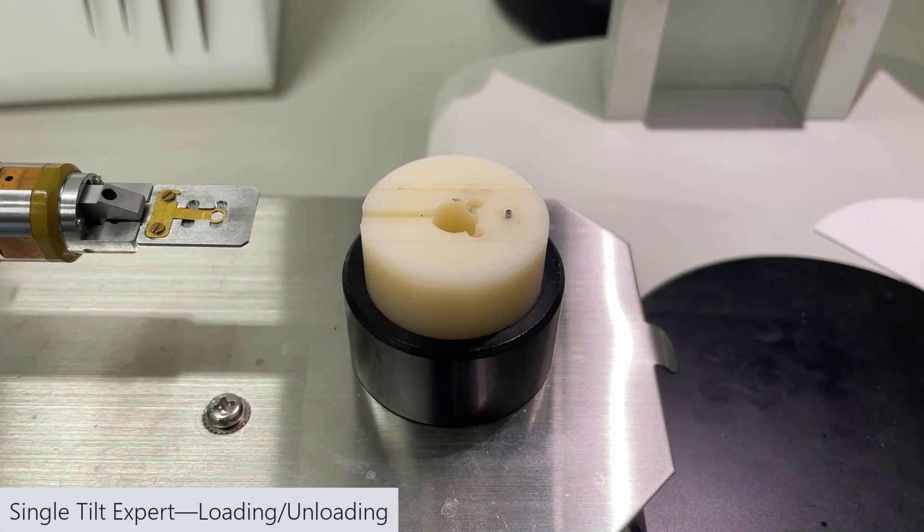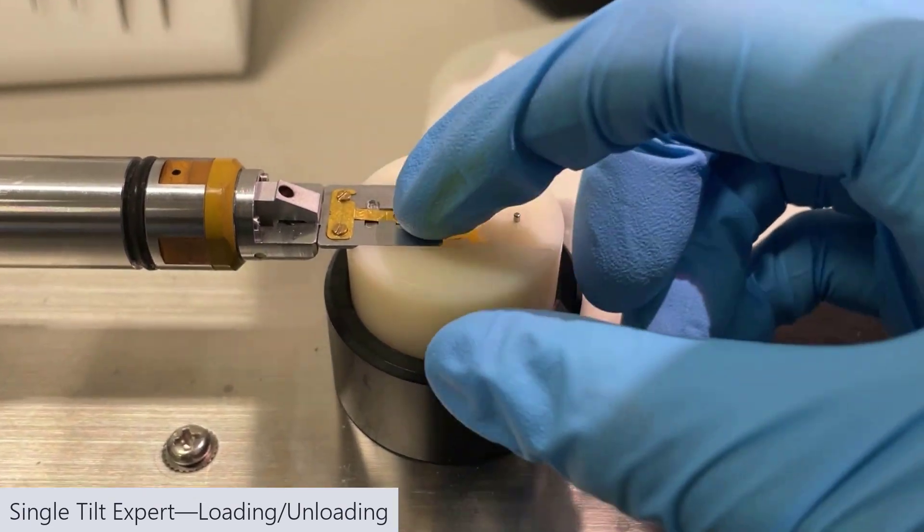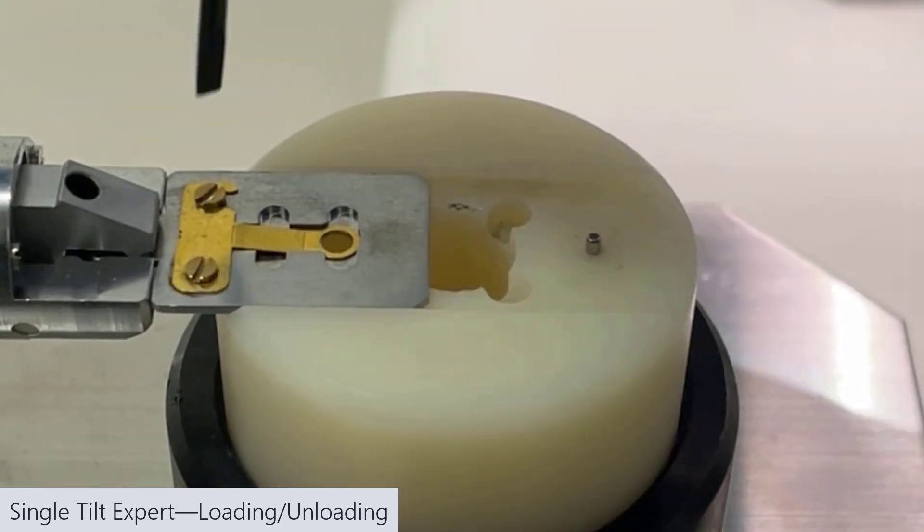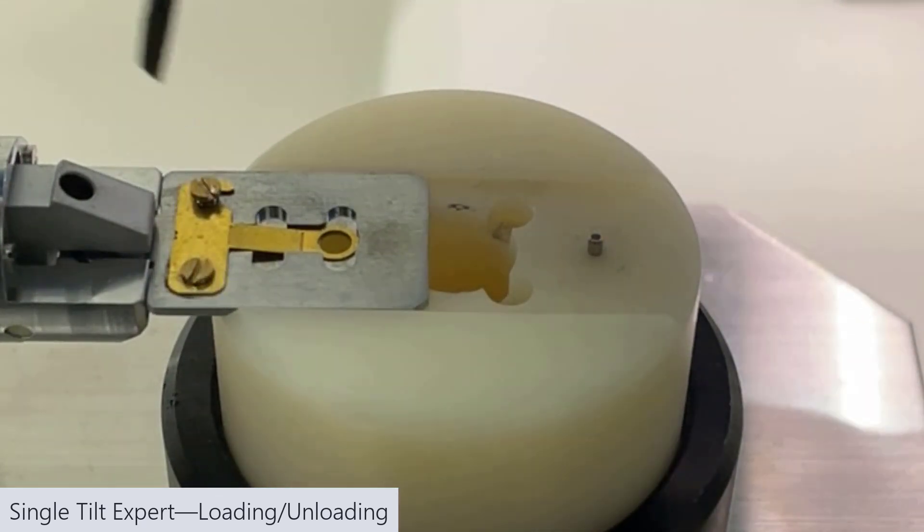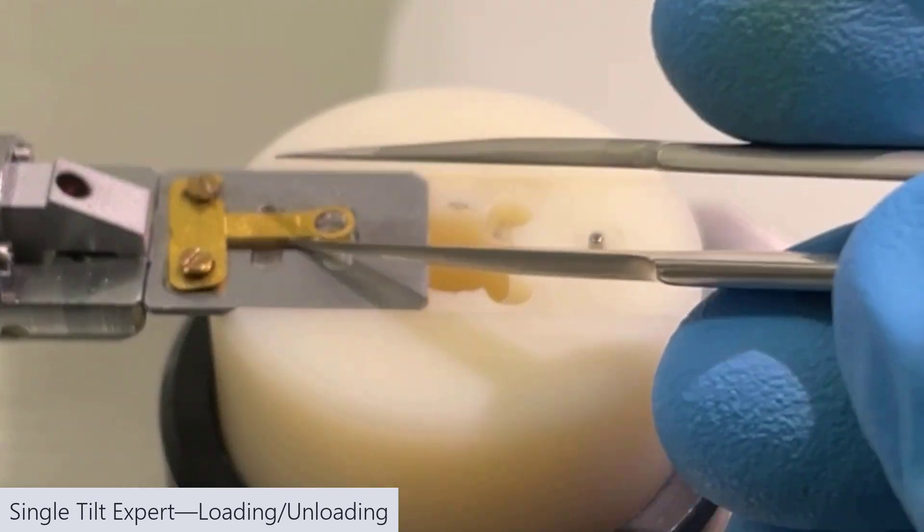Now as I mentioned, some labs will leave the blade on all the time. So if your lab does that, it's a little bit more difficult to load the sample, but it is quicker. In that case, just loosen the two screws. You want to loosen them enough that you can actually move it out of the way.